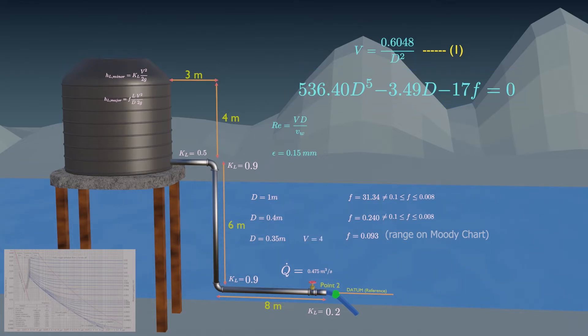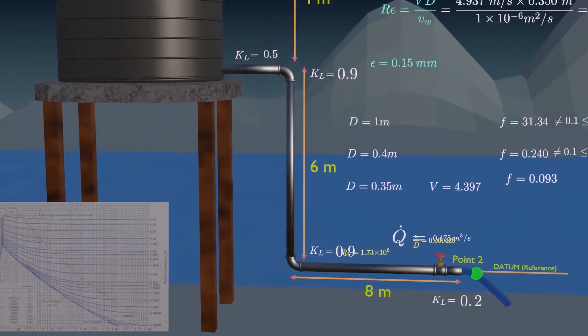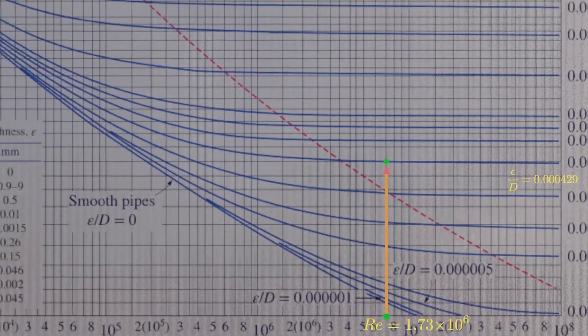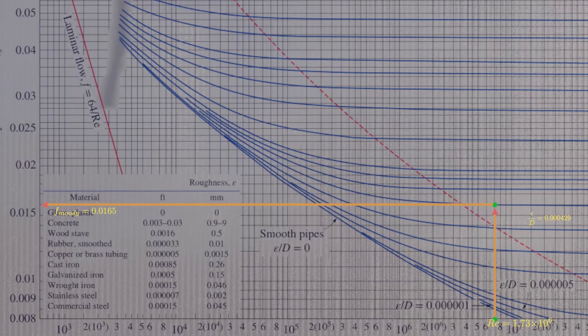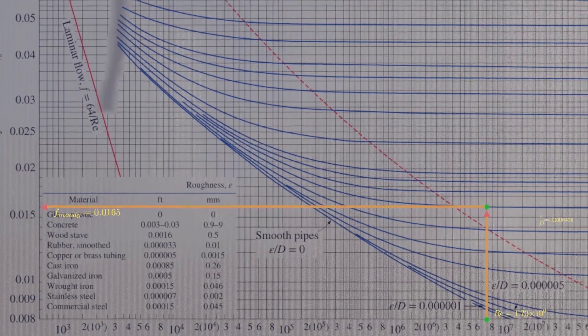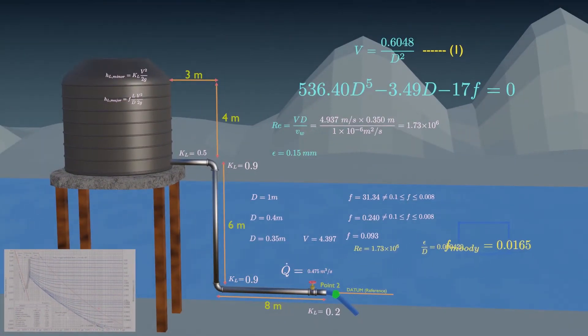Now using this diameter solve for velocity to obtain Reynolds number, and also get relative pipe roughness. Therefore, from the Moody diagram with these values, we attain friction factor as. But it is not equal to our previous friction factor, so our assumption of diameter was again wrong.